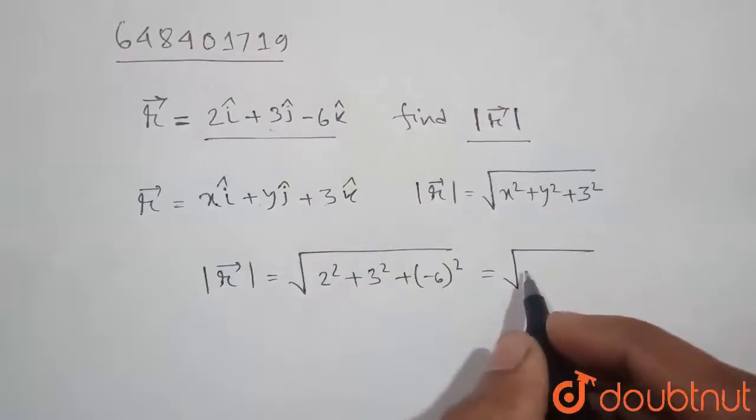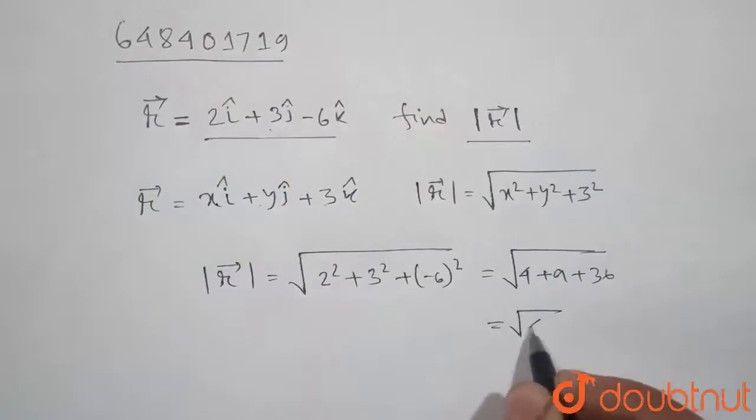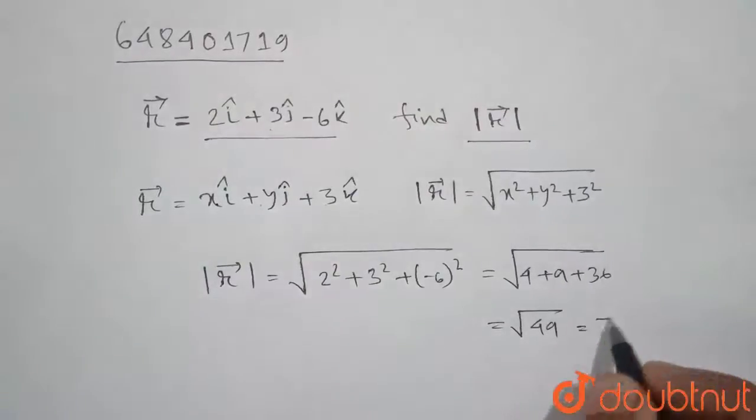Then it is equal to 4 plus 9 plus 36, which is equal to square root of 49, which is equal to 7.